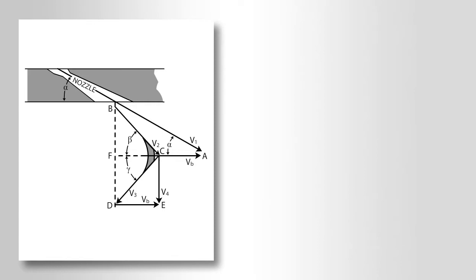The component of absolute steam entrance velocity, V1, in the direction of the blade motion is shown by the vector FA equals V1 cosine alpha equals V2 cosine beta plus VB. The smaller the angle alpha can be made, the larger the component will be.